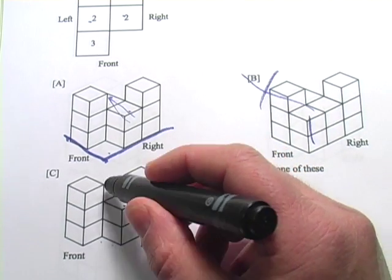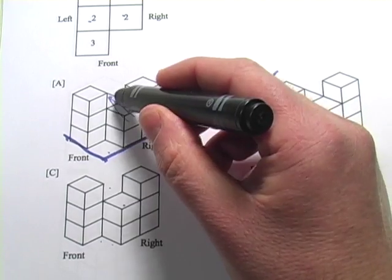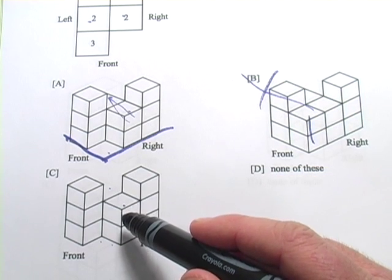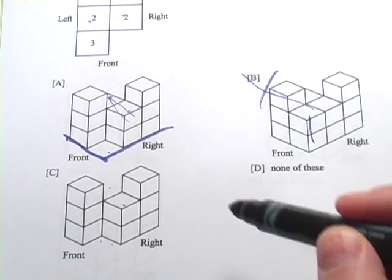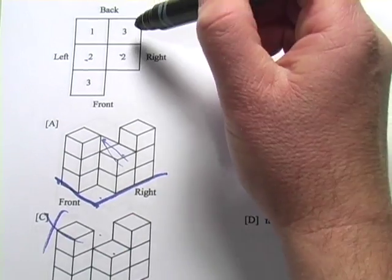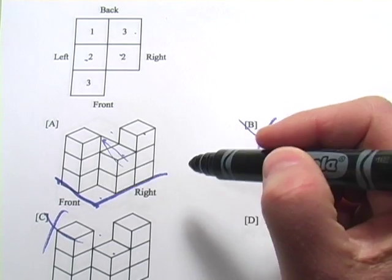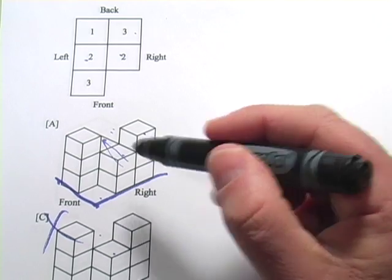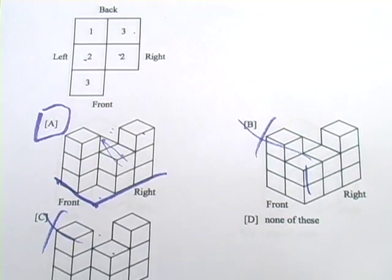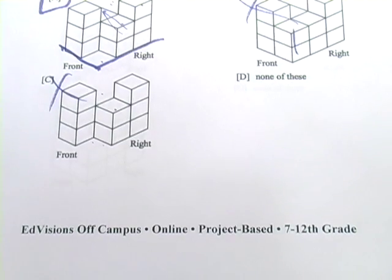And C, two and, well, it doesn't look like there's anything back there. And if there were two back there, we would be able to see at least a little bit of that top. So it looks like this is not correct. Now A, let's just check because none of these is one of our choices. C is out. A, in the back row, we have three and one. So here we have three and then, well, we can't really see. One could be hiding down there. So A looks like the correct answer. And that's a little bit of work with isometric and orthographic projections.